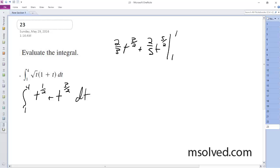from 1 to 4. So then what we end up here with is equal to 16 over 3, plus 64 over 5, minus 2 thirds, plus 2 fifths